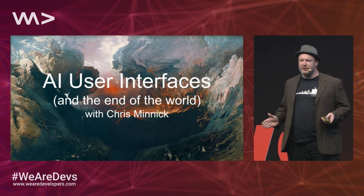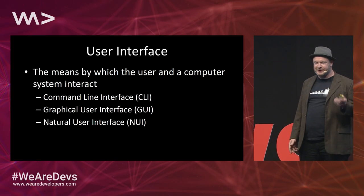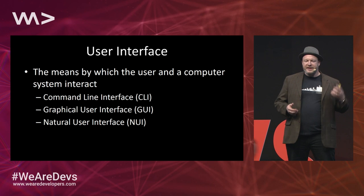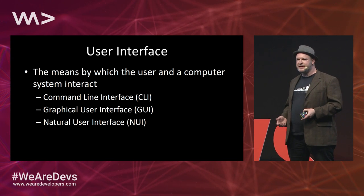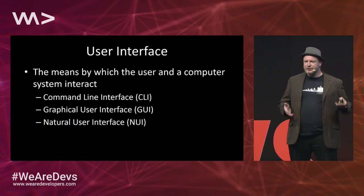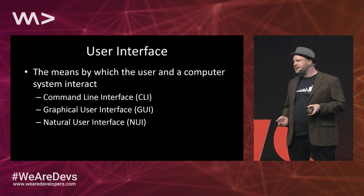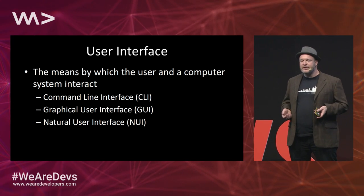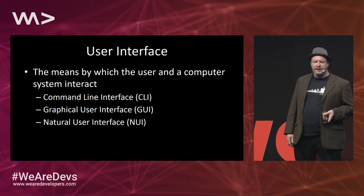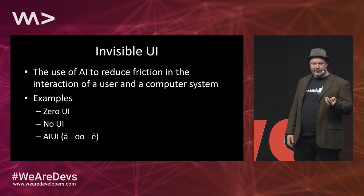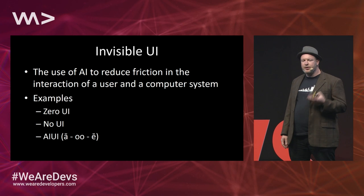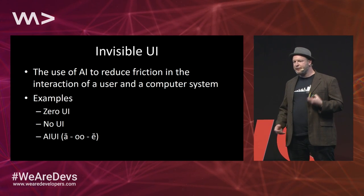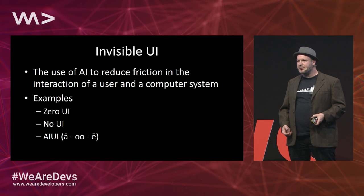I'm going to get started with a couple of definitions. A user interface — we're talking about the means by which a user and a computer system interact. Usually, this involves some software and some kind of a user input device. And then invisible UI: we're talking about the idea of using artificial intelligence to reduce the friction in the interaction of users and a computer system.